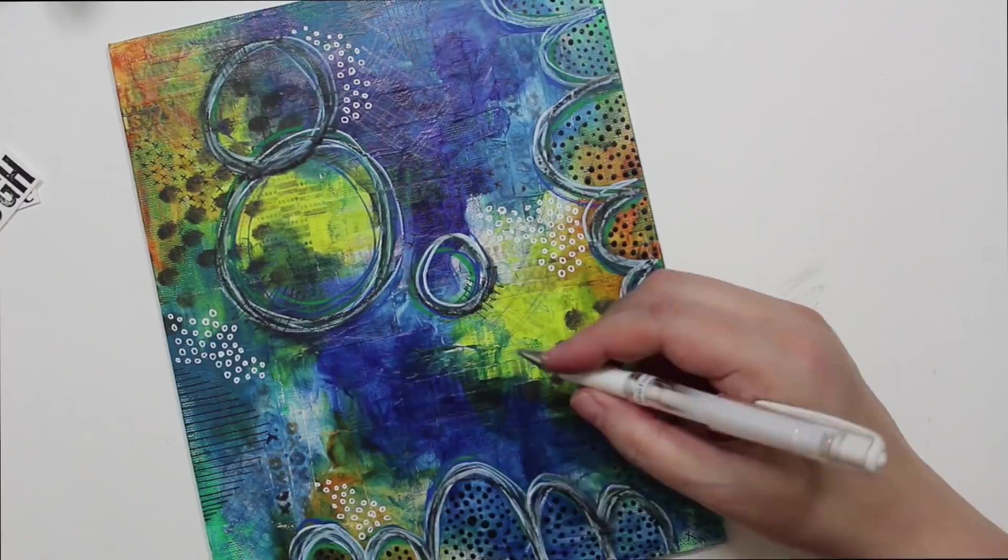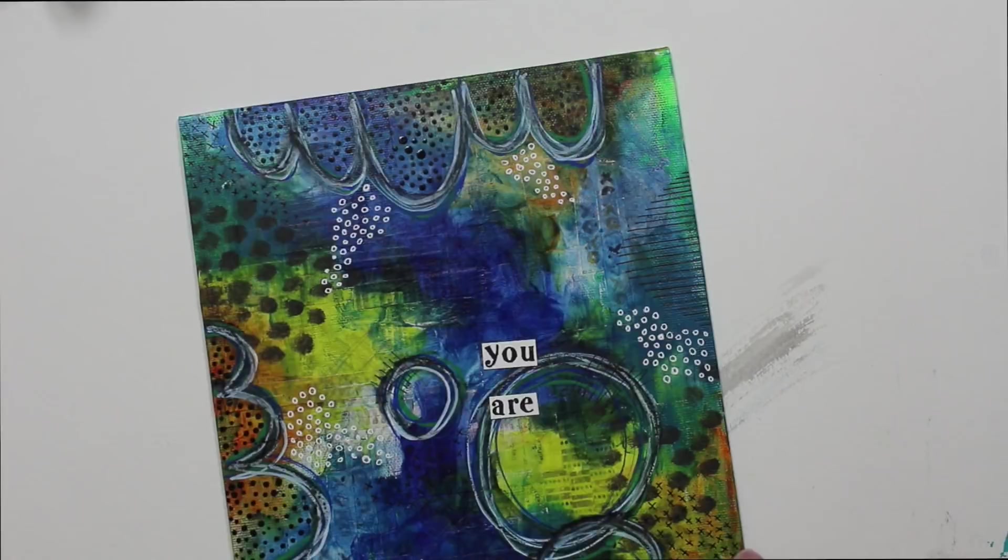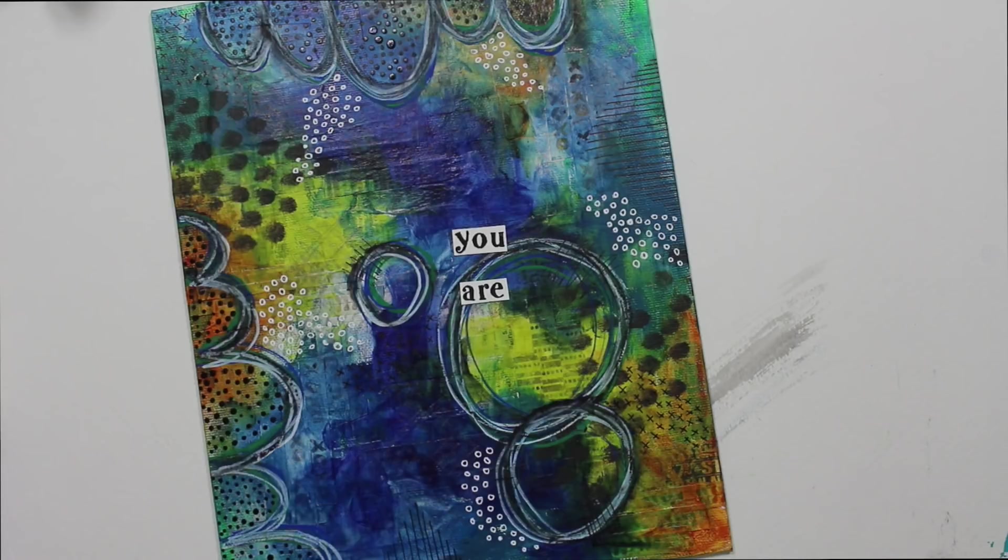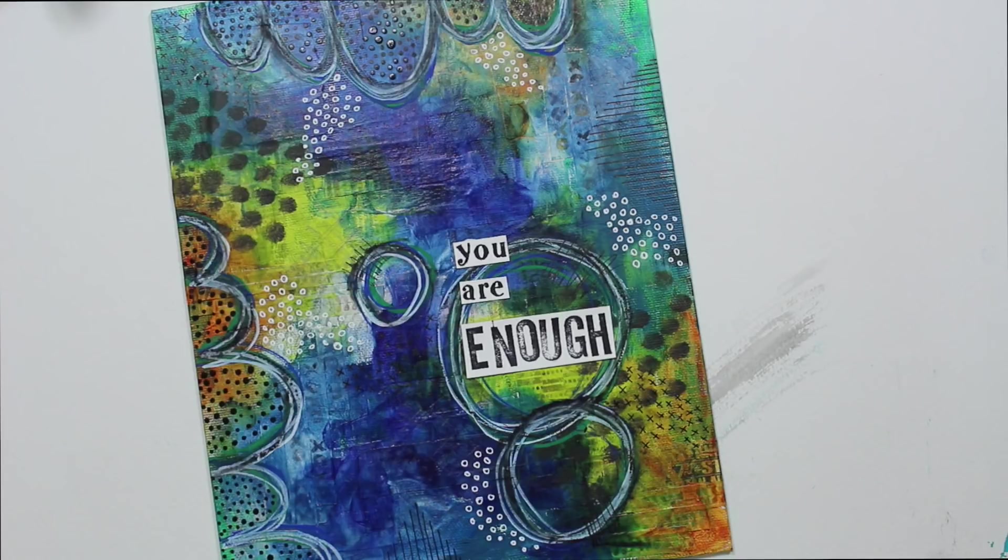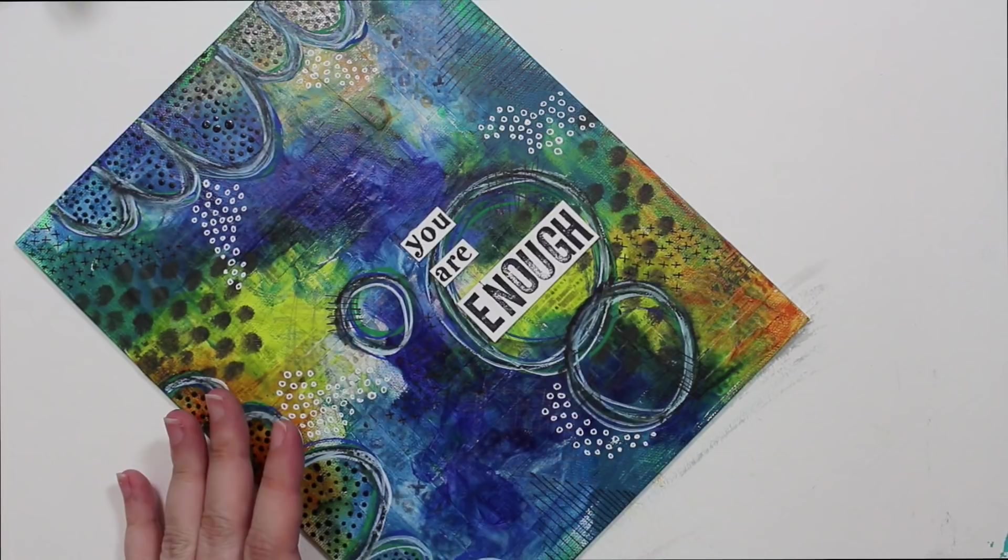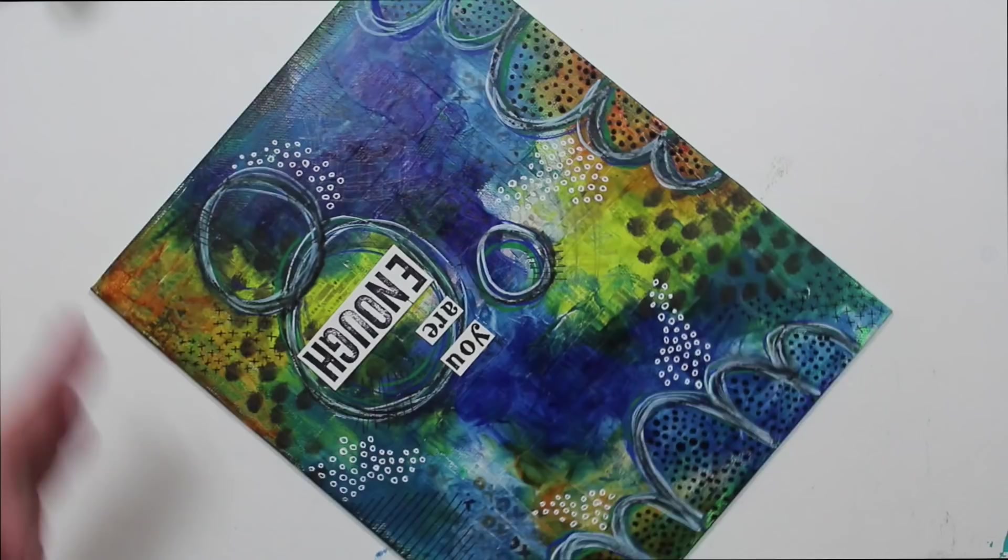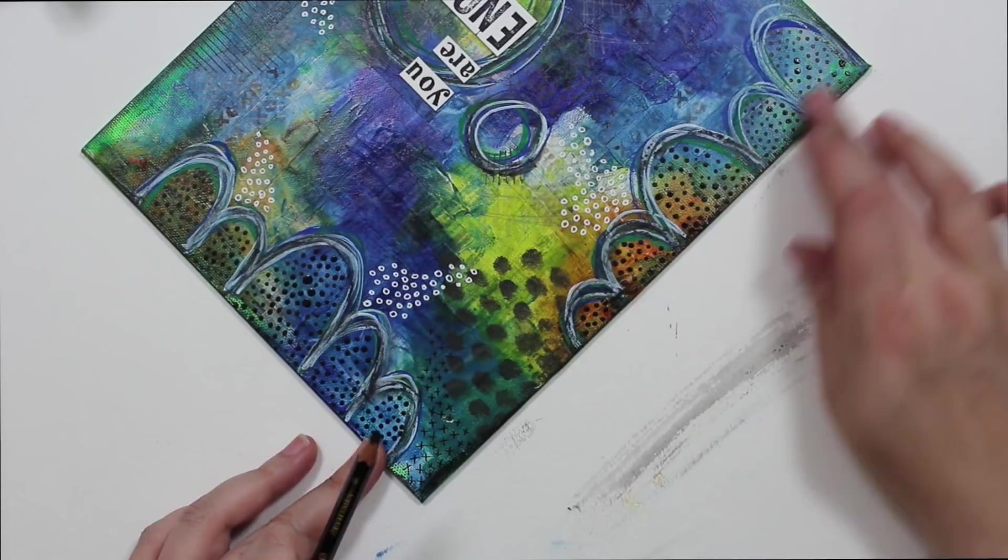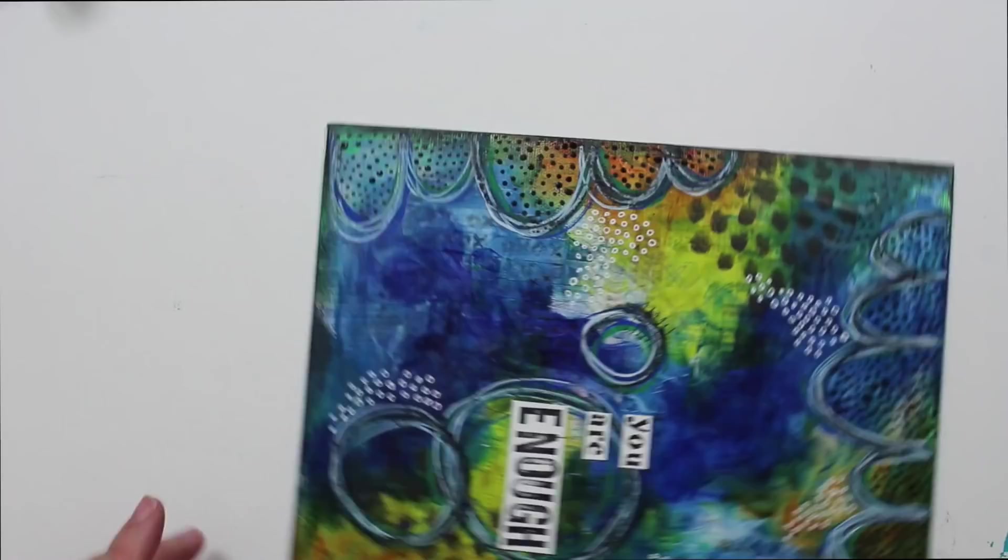I think that's where I'm going to put this little sentiment, you are enough. I'm just going to grab my Aliens Fast Grab Tacky Glue and put that down. I think while I'm letting that dry I'm going to take my Stabilo pencil and I'm just going to edge the whole outside here to give it a frame. I'm also going to do the same thing to the edge. I'm just going to take a break. I'm going to weight this down just a little bit so it will dry completely flat and I'll be back in just a few minutes.